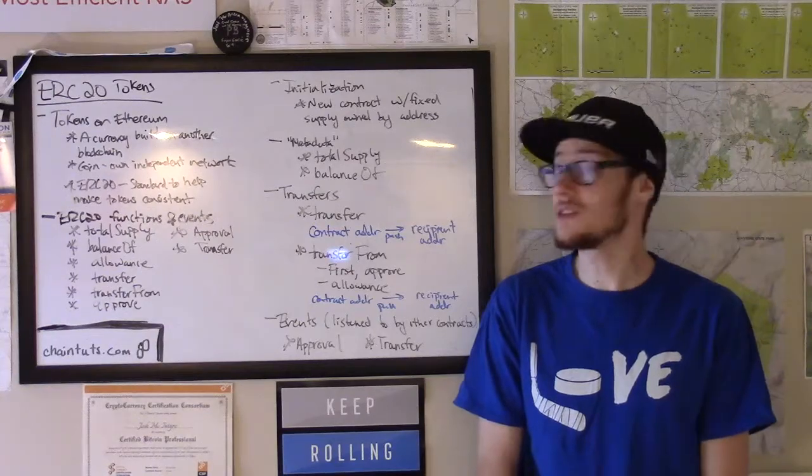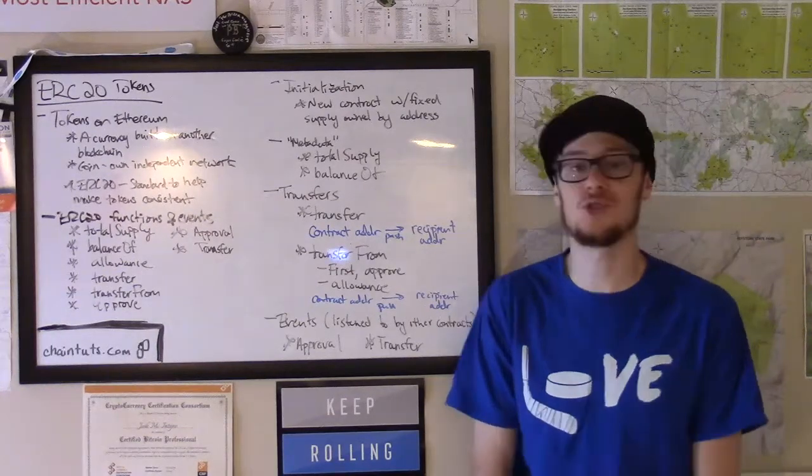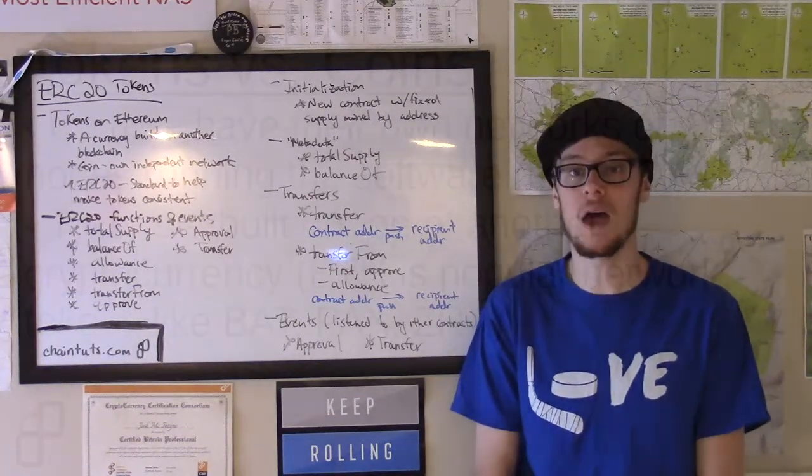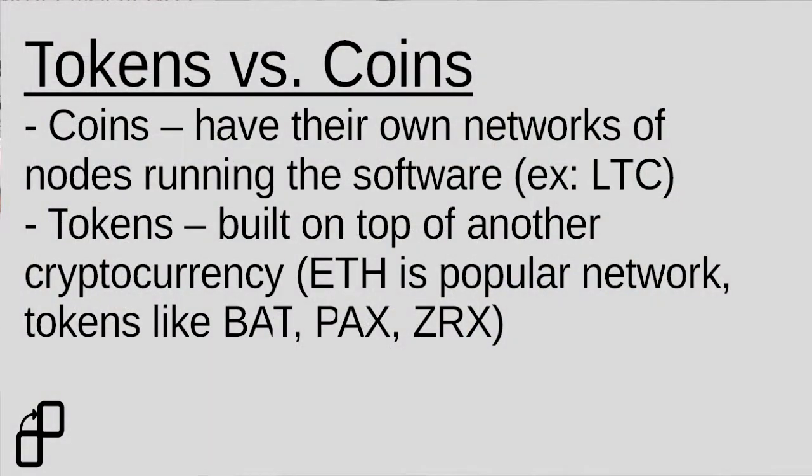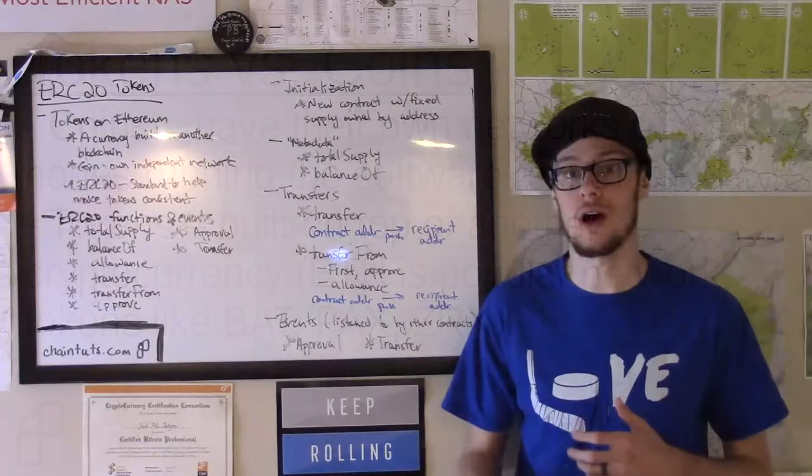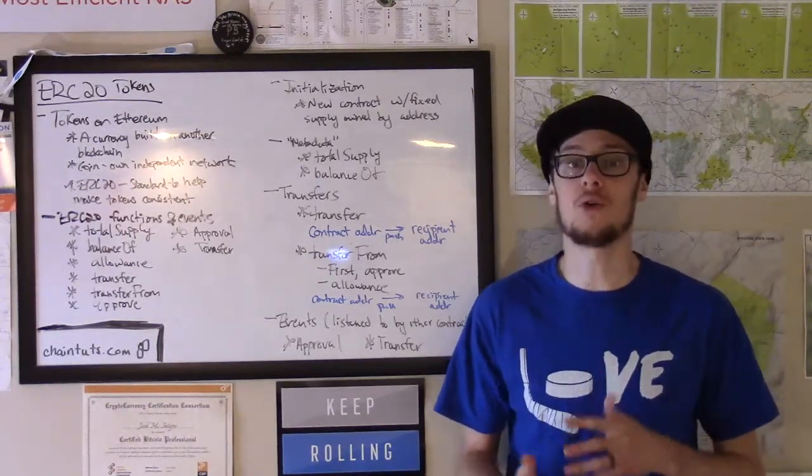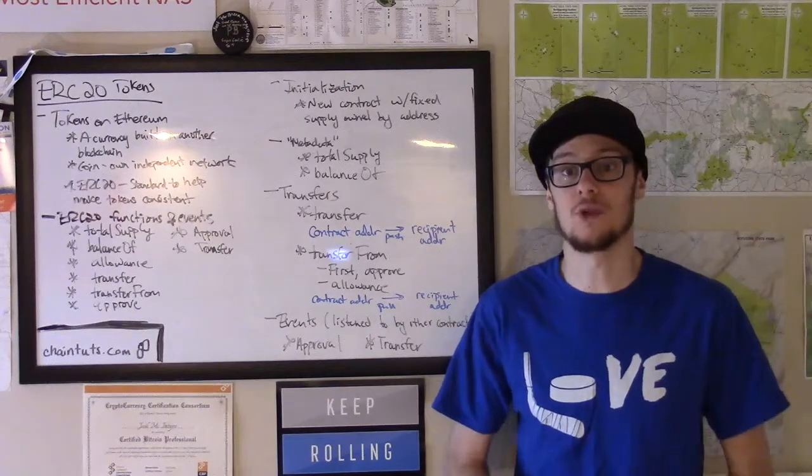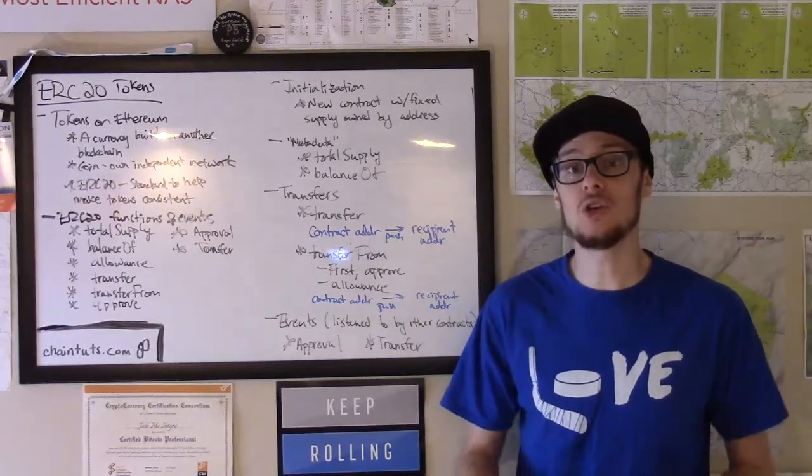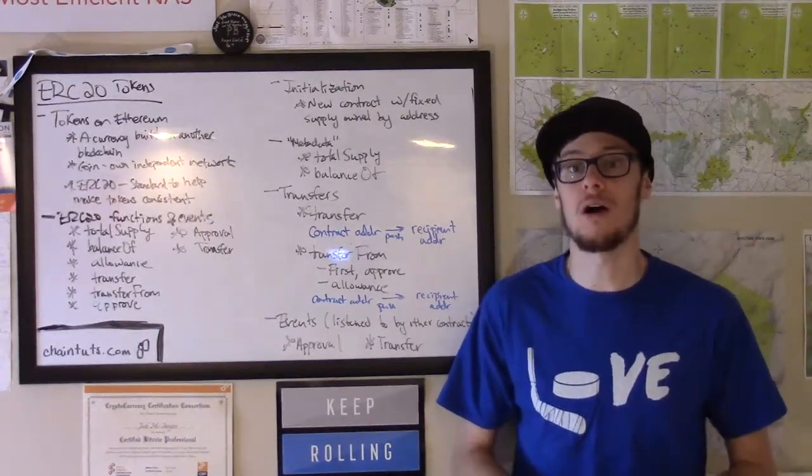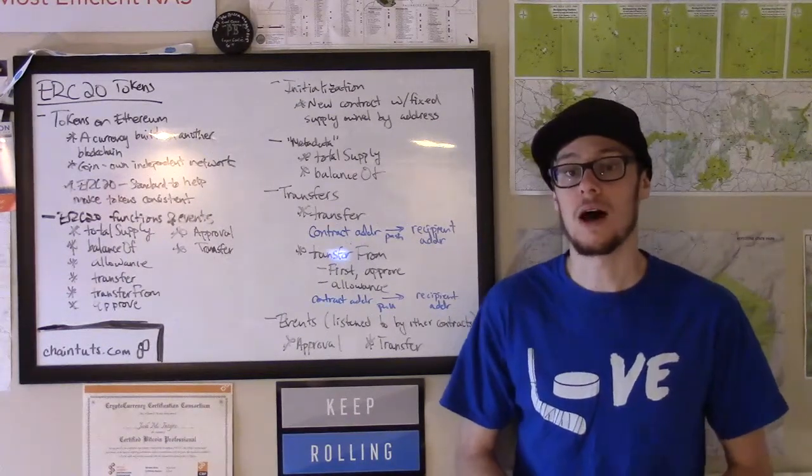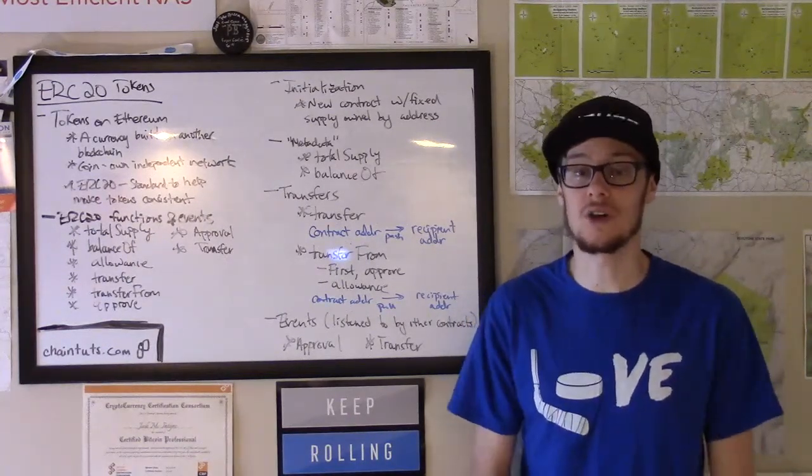So first, let's discuss the difference between a token and a coin. A coin, like Litecoin or Bitcoin, is a cryptocurrency that runs on its own specific network of nodes running the shared software. So for example, Litecoin was forked off of Bitcoin in the early days of cryptocurrency, but it uses its own network of nodes running the Litecoin software to create this decentralized currency.